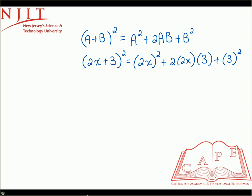So now we just have to get rid of the parentheses, multiply everything together and simplify. So 2x squared, don't forget you have to square both the 2 and the x, so that should give us 4x squared. Plus, now you multiply all three terms together.